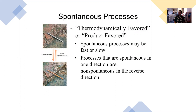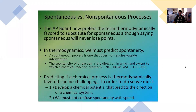The nail rusting would be thermodynamically favored, product favored — that rust product would be favored. And to undo that rusting chemically, that would not be a thermodynamically favored reaction. So again, spontaneous versus non-spontaneous.